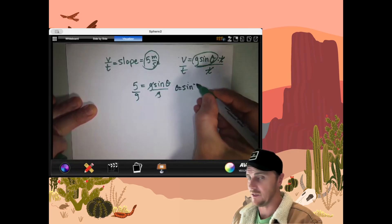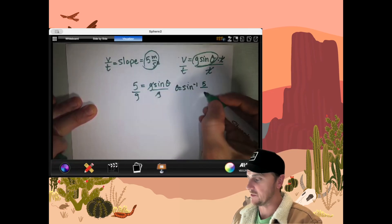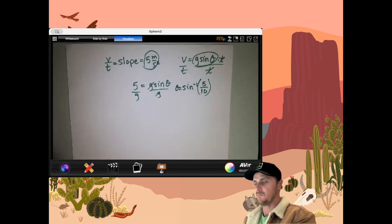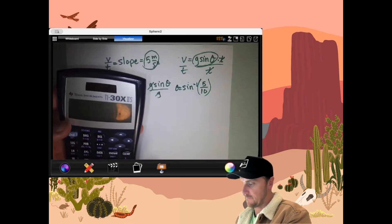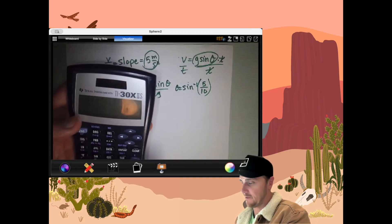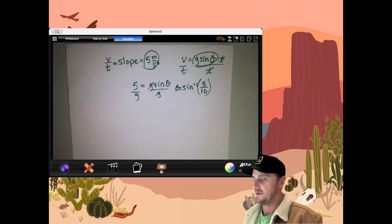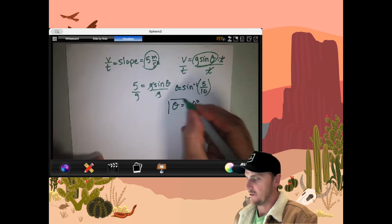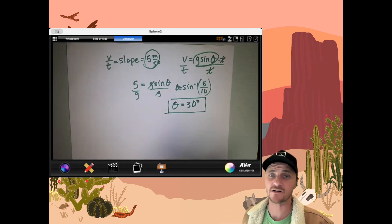Theta is equal to the inverse sine of 5 over, and just to keep things easy, I'm going to throw a 10 in there. You can put 9.8, that's fine, and I'm going to do inverse sine of a half, right? Inverse sine of a half gives me an angle of 30 degrees. Now that sounds pretty reasonable, and that seems like an angle that we'd actually use in a laboratory setting. There you go, all done. Please like, please subscribe, please ring the bell, because I'm rolling out more of these questions. Talk to you soon. Bye-bye.